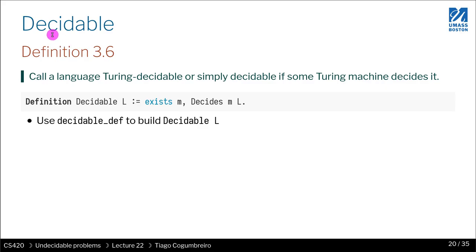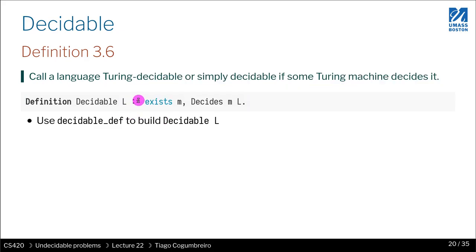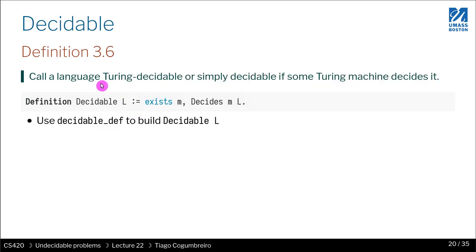So now we are ready to introduce decidable. We say that a language is decidable if there is some machine that decides it. Right? So it's just a shorter way of saying when we don't really care about what machine is deciding, we just want to know whether there exists a machine that decides it. Right?